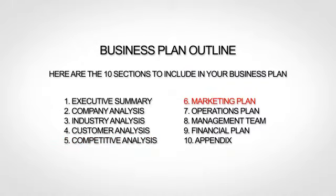The sixth section is your marketing plan, where you lay out your marketing strategy. The seventh section is your operations plan, where you explain how you actually run or will run your business. The next section, the management team, is where you provide bios of your team.